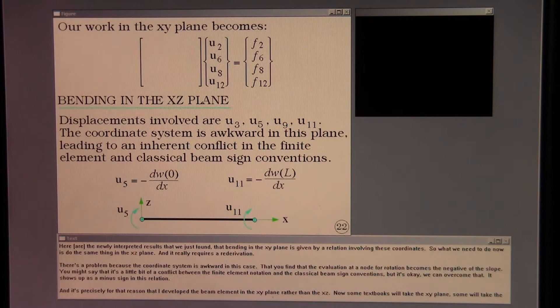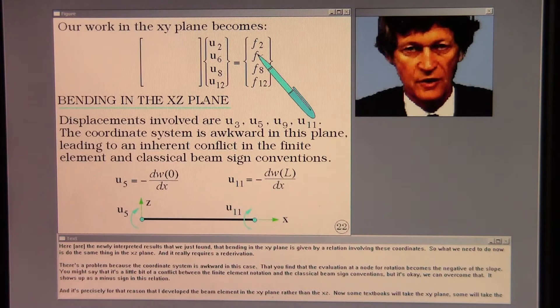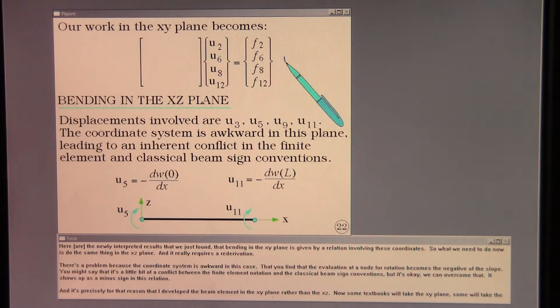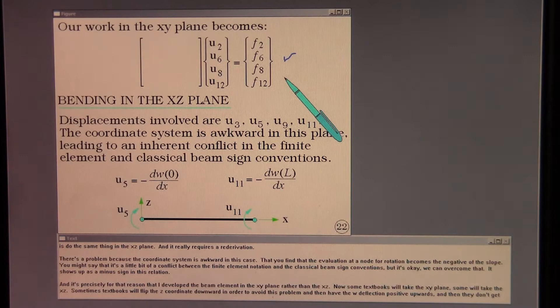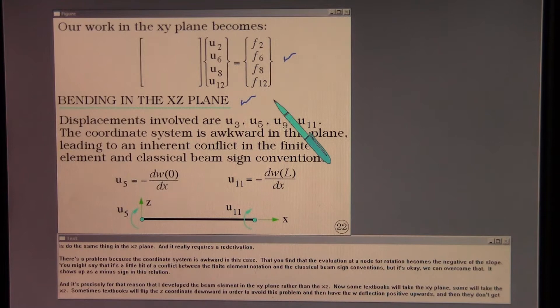Here's the newly interpreted results that we just found. That bending in the XY plane is given by a relation involving these coordinates. So what we need to do now is do the same thing in the XZ plane. And it really requires a re-derivation.